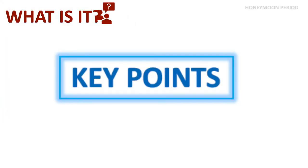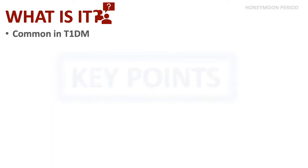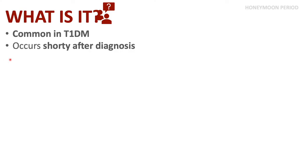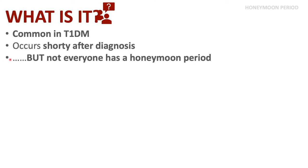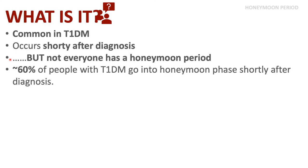Let's go through some key points of the honeymoon period. It is common in type 1 diabetes and occurs shortly after diagnosis, but not everyone has a honeymoon period. Approximately 60 percent of people with type 1 diabetes will go through the honeymoon phase shortly after diagnosis.